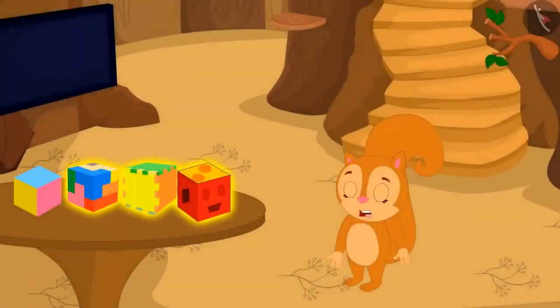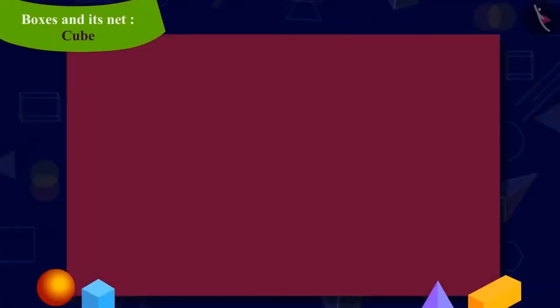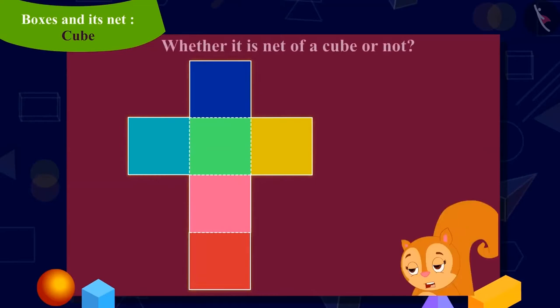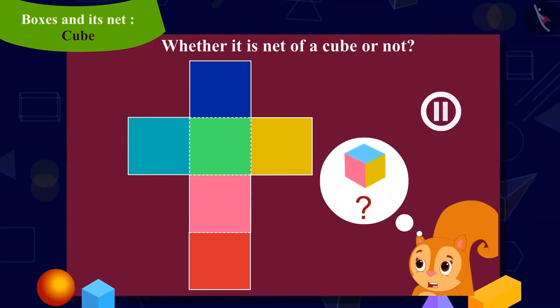Now Chanda has to make three more boxes for the toys. Chanda remembered that Appu told her that more than one net of every three-dimensional shape is possible. Chanda now made a shape like this. Can you tell whether this shape of Chanda is also a net of a cube or not? You can pause the video to find out the answer.